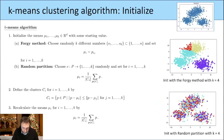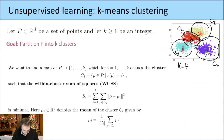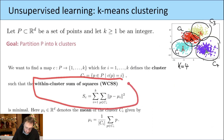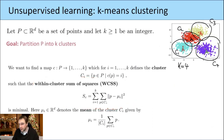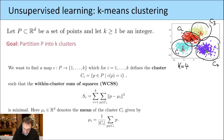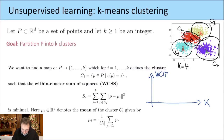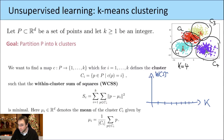One approach: you can try to figure out how to use the within-cluster sum of squares to find the correct k. The basic idea is to run this algorithm for different values of k, compute the WCSS each time, and plot it. Of course, if you increase k and allow more clusters, this number becomes smaller and smaller.